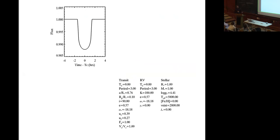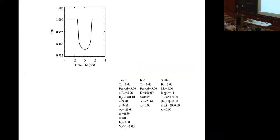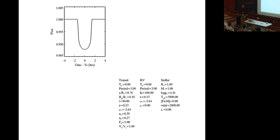Just to drive this home with animation: this is the same plot, except now I'm changing e and ω. This is eccentricity of 0.8 versus 0.0 — a huge change in eccentricity and argument of periastron, but there's basically no change in the resulting transit light curve. If you look really closely, you can see a very slight shift in ingress and egress, but you're not really that sensitive to it. This is a disaster.